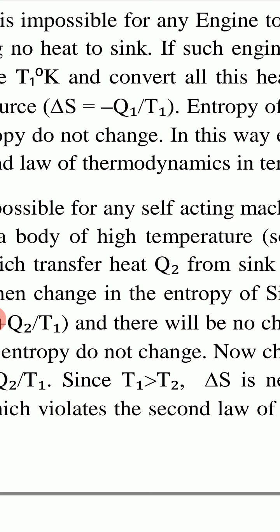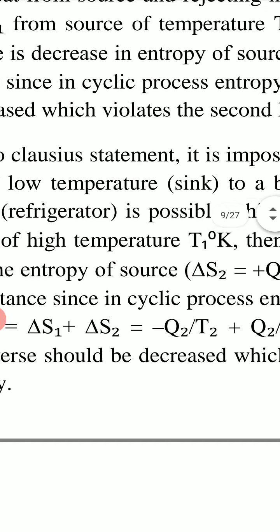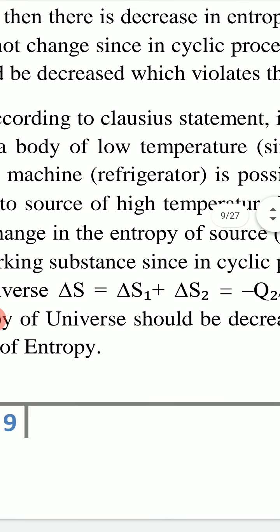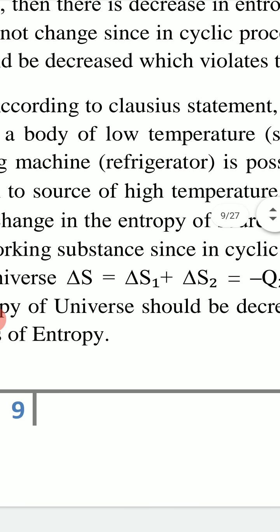The entropy of the universe decreasing violates the second law of thermodynamics in terms of entropy. So if we assume the Kelvin–Planck statement is wrong, it violates the entropy statement of the second law.